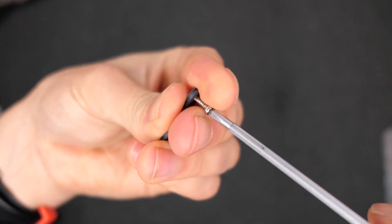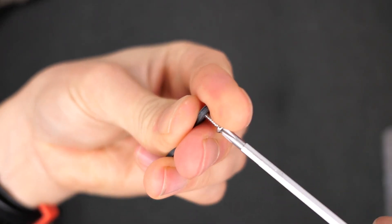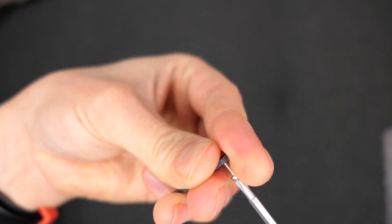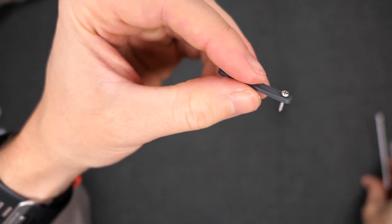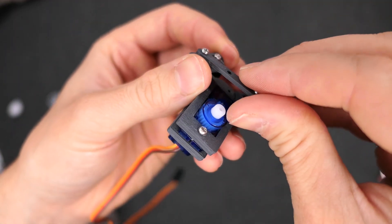Next screw two M2 screws through each end of the long arm. Place this with the screws through the back of the eye holders.